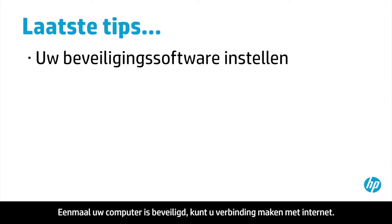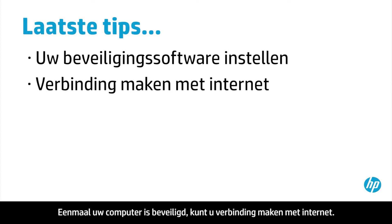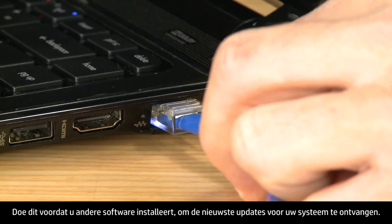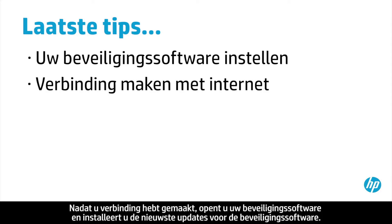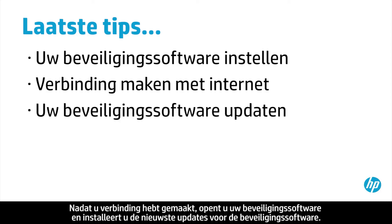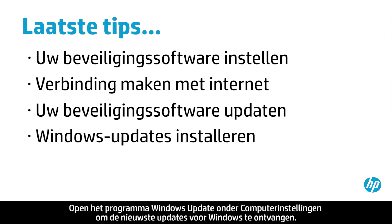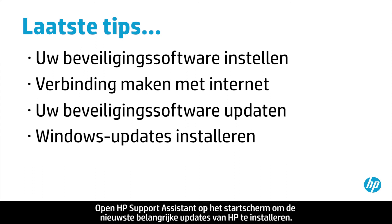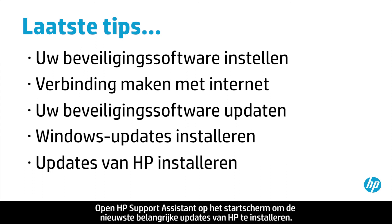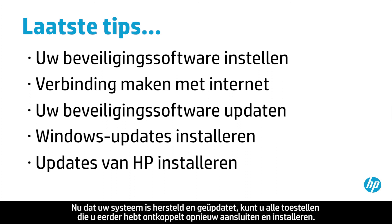Once your computer is secure, connect to the internet. Do this before installing other software in order to get the latest updates to your system. After connecting, open your security software and get the latest updates, especially updates to virus definitions. Open the Windows Update tool in PC settings to get the latest updates for Windows. Open HP Support Assistant on the Start screen to install the latest important updates from HP. Now that your system has been recovered and updated, you can reconnect and install devices that were unplugged previously.